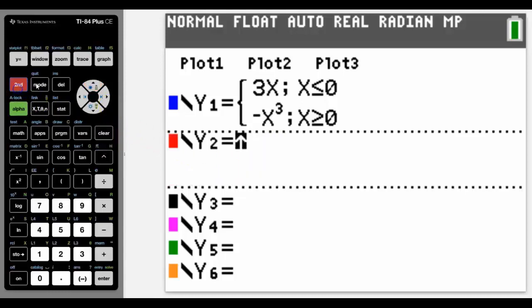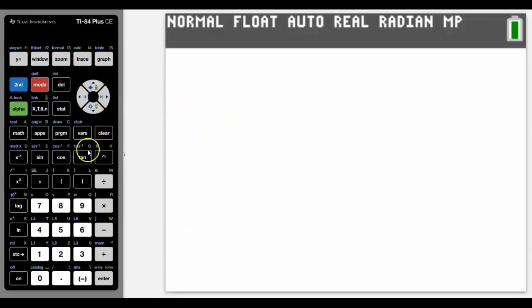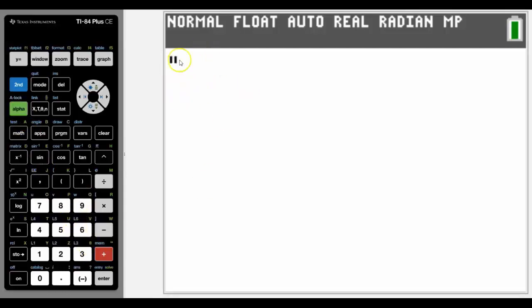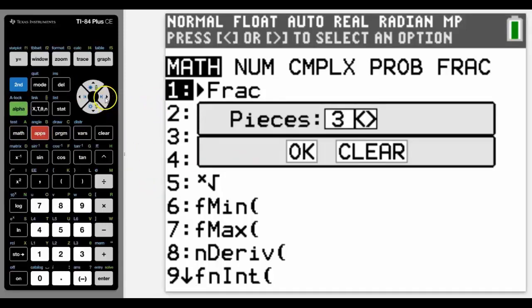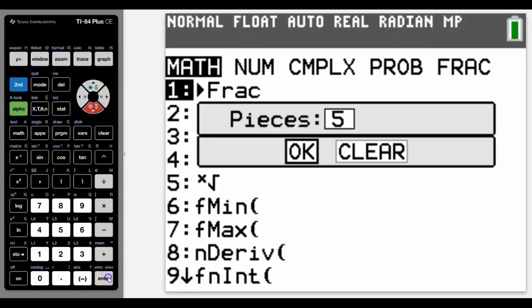So we're going to do that slightly differently, and for us to do that, we're going to do it in normal calculator screen. Now, the only extra thing that we need to do is add speech marks, because we need to wrap up the piecewise function in speech marks so that we can store it as Y2.